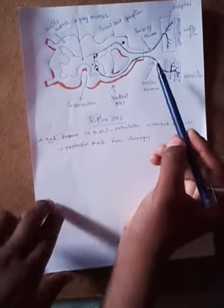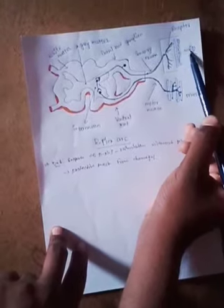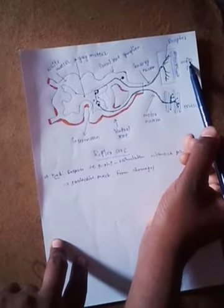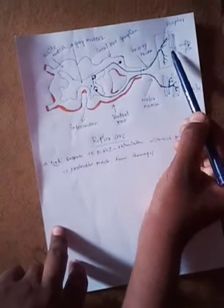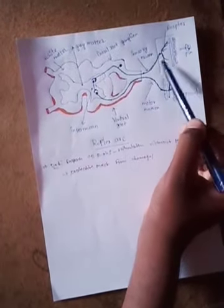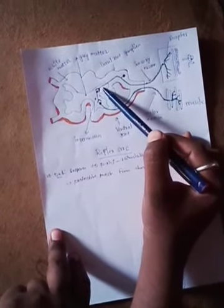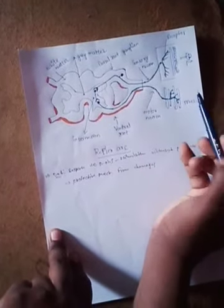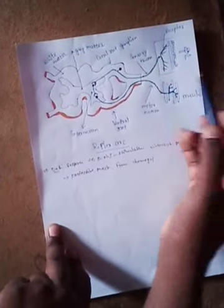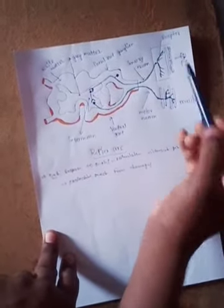The reflex arc structure is connected to the receptor site. The receptor site — a pin is physically acting on our skin, and the response is immediately a reflex action. The message is transferred into the brain or spinal cord, and then the response goes to the muscle. So in the brain, the receptor and muscle are connected here.